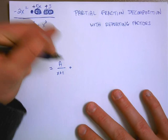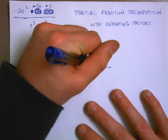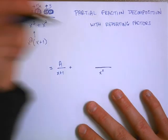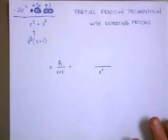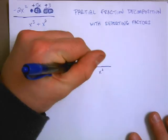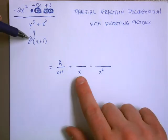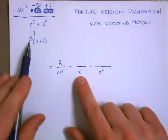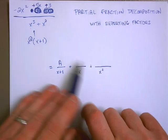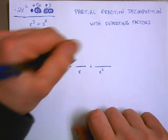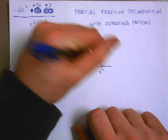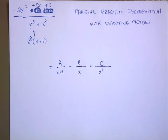We also know that we're going to need one that has the x squared term on the bottom. But the thing that is not intuitive, that doesn't come logically to us, is that we also need to represent x to the first power here. So if I have an x squared, I need to represent x to the first power and x to the second power as different fractions.